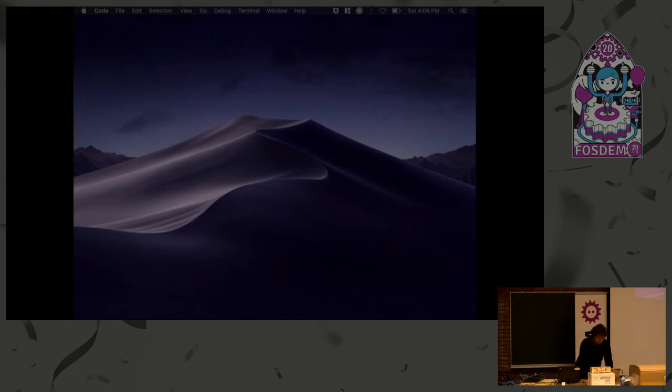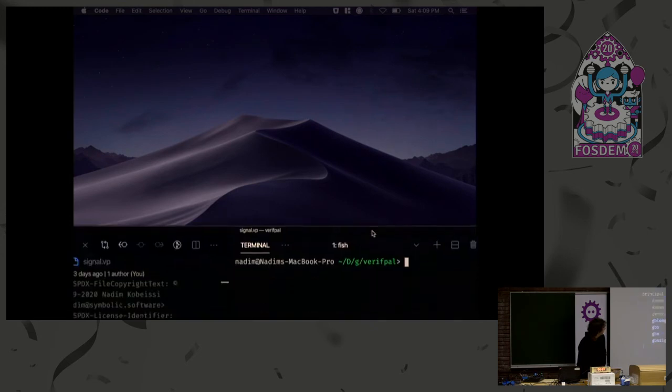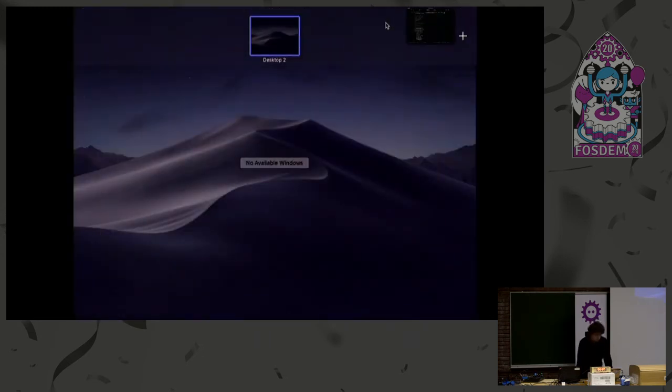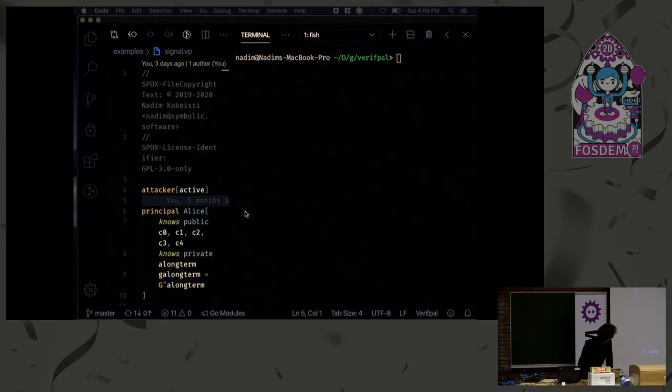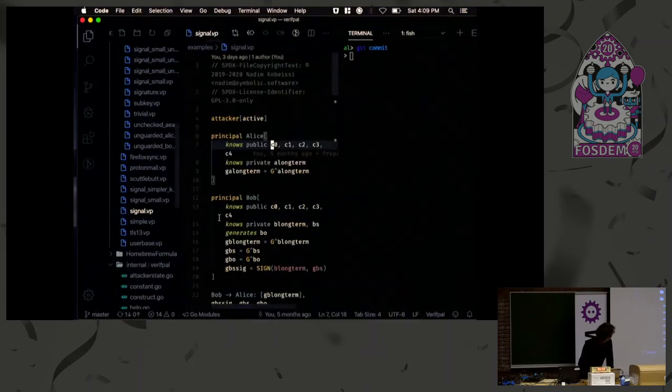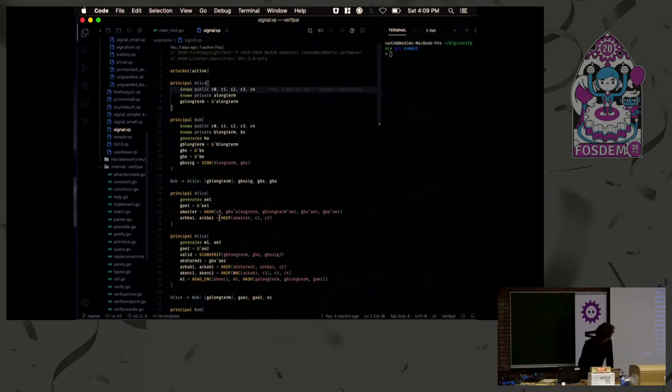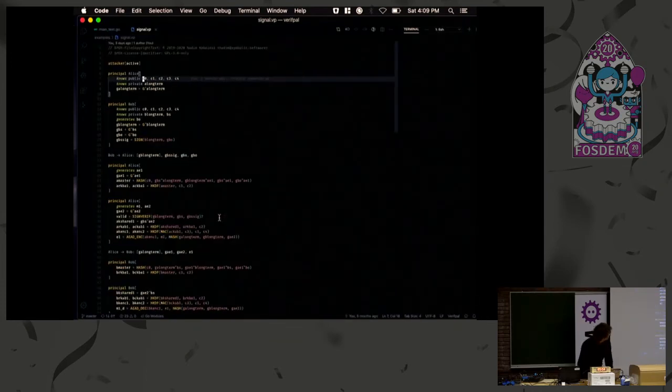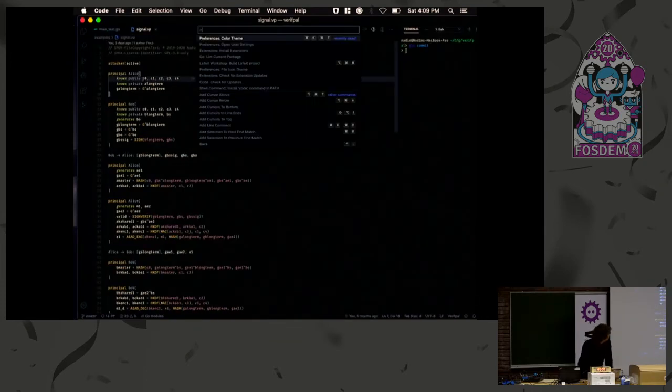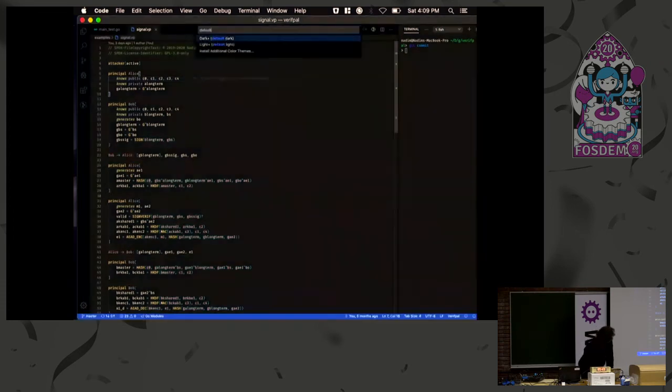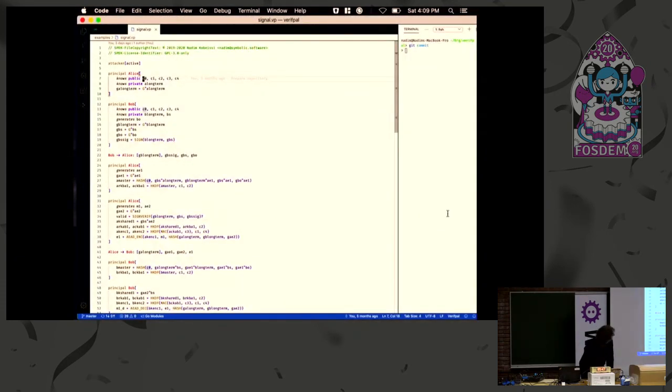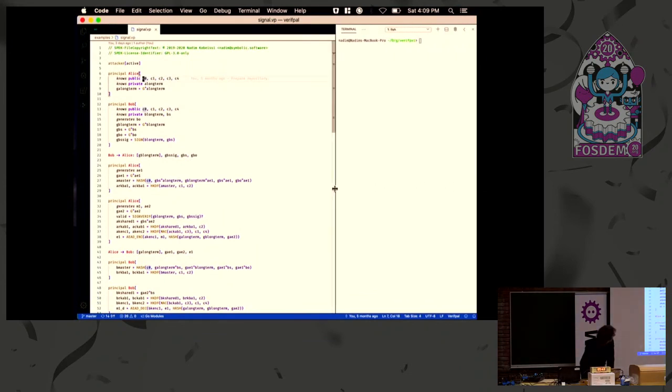So this is what a VerifPal model would look like here on the left. You see, this is VerifPal. This is the VerifPal Signal model. Oh, okay. Thank you. There we go. Wow. Okay. Well, you can certainly see it now. Maybe you see it a bit too much. Okay. So there.